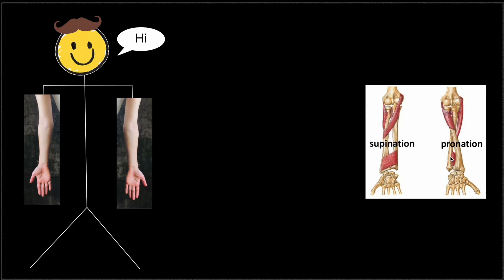If we look at this side, we can see that the hand is pronated. We're going to talk about supination and pronation very thoroughly, but at this point, just remember that when we're pronating our hand, the two forearm bones cross each other. So that's why this is not the correct anatomical position.